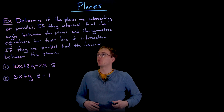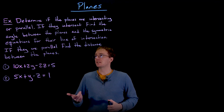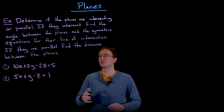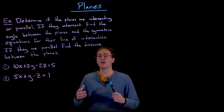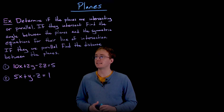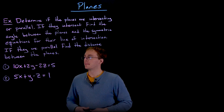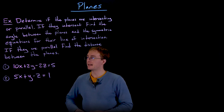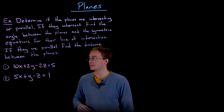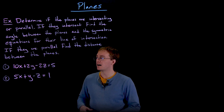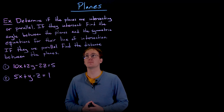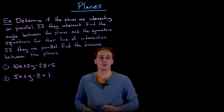In this example we are asked to determine if the given planes are intersecting or if they are parallel. If they intersect, we're going to find the angle between the intersecting planes as well as the symmetric equations for the line of intersection. If they are parallel planes, we're going to find the distance between the planes instead. Our first plane is given by 10x plus 2y minus 2z equals 5, and our second plane is given by 5x plus y minus z equals 1.